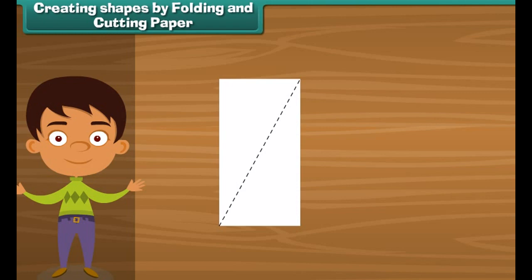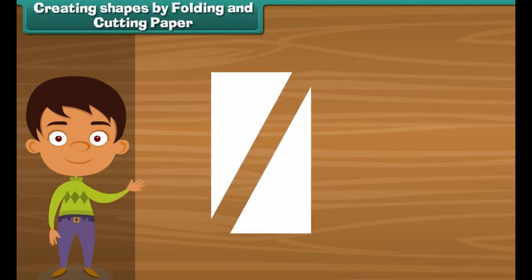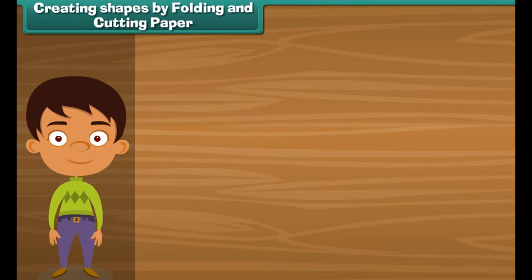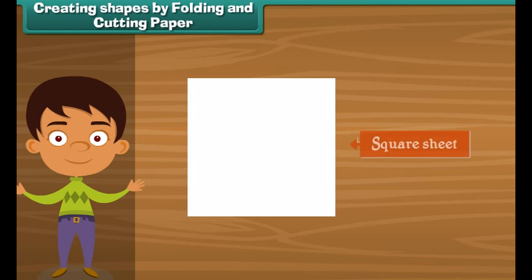Anu tries to make a triangle out of it. Draw a dotted line on this sheet of paper like this. Cut the paper on the dotted line. Now what you see is a triangle.